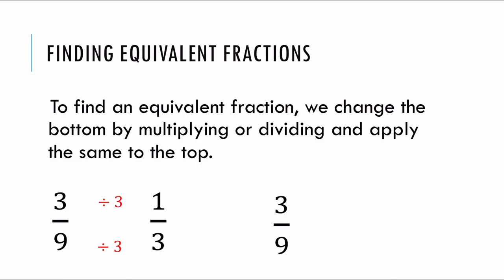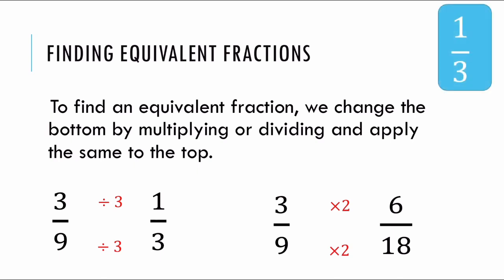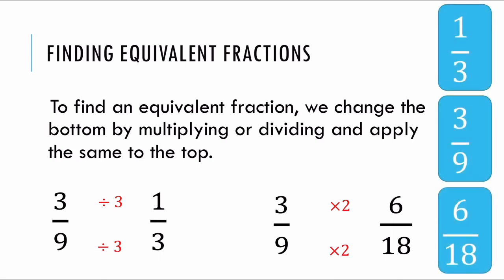Taking the same number, three over nine, let's say this time I decide to multiply the bottom by two. As long as I multiply the top by two, I get an equivalent fraction to three over nine. So one over three, three over nine, and six over eighteen are all equivalent fractions.